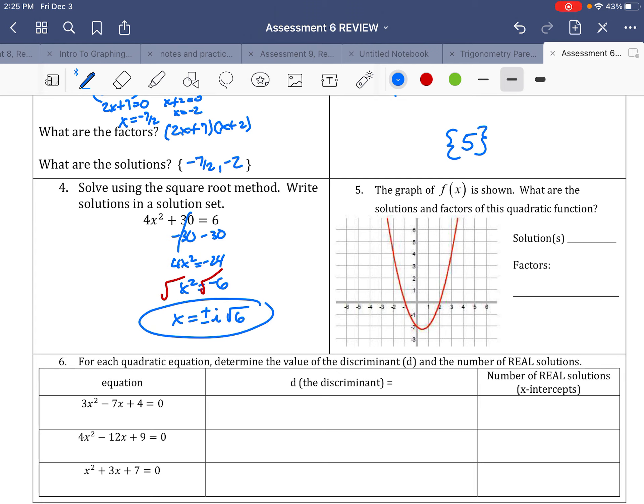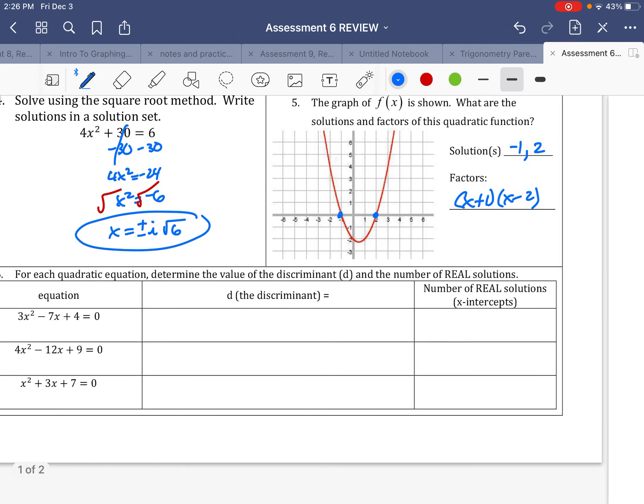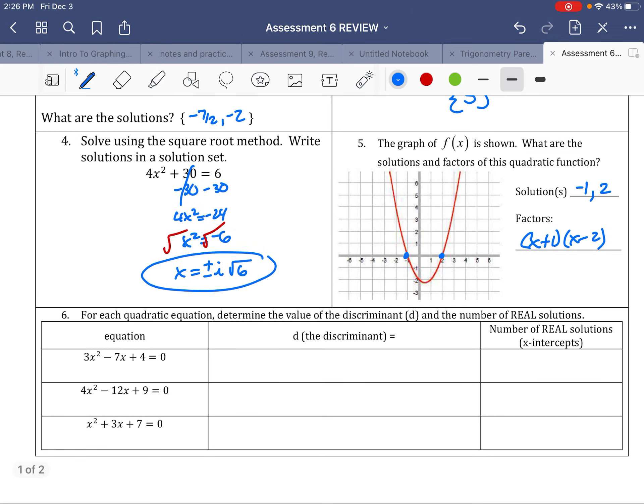Over here on number 5. So remember the 0s are X intercepts, so that is negative 1. Those are my solutions, negative 1 and 2. This means the factors would be X plus 1 and X minus 2.